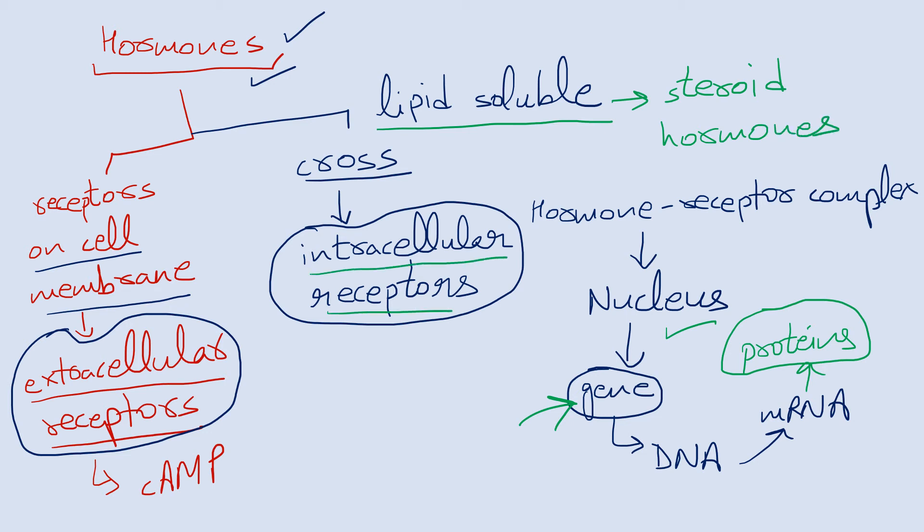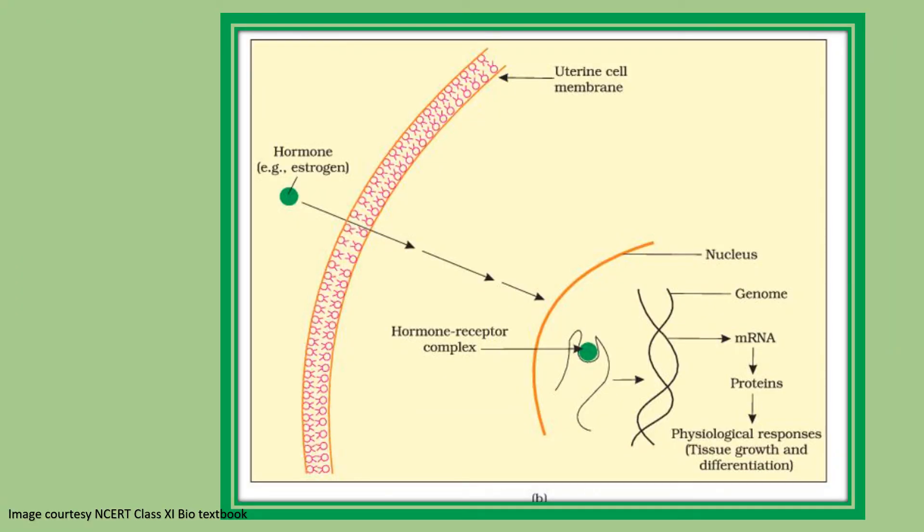Most of these steroid hormones like estrogen are lipid-soluble and they will act with the help of intracellular receptors. You can see estrogen hormone is crossing the cell membrane and forming the hormone-receptor complex which is acting inside the nucleus, activating certain genes which form mRNA that forms proteins which bring about changes in the tissue, growth and differentiation.